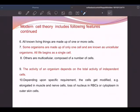The activity of an organism depends on the total activity of independent cells. Cell one, cell two, cell three, cell four, all together the amount of energy that they transfer will decide the total activity of the organism. Depending upon specific requirement, cells are modified, like elongated in muscle nervous cells, loss of nucleus in RBCs, cytoplasm in other skin cells. There will be some changes.